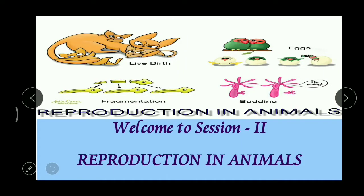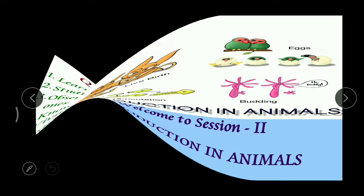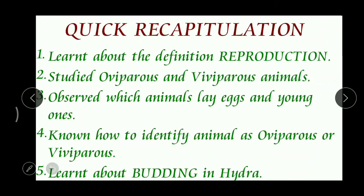Very good morning children. Welcome to session 2, reproduction in animals. Already in the previous session we studied about the definition of reproduction. Reproduction means the process of producing new organisms of the same species, and it is a very important property of all living organisms like plants, animals, and microorganisms.